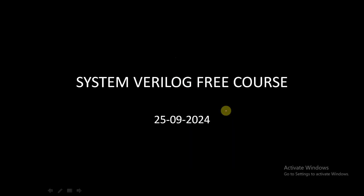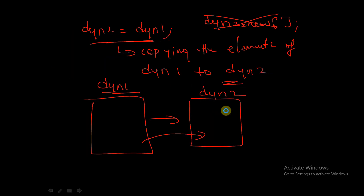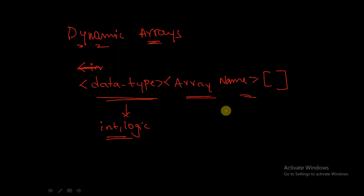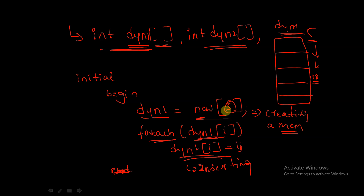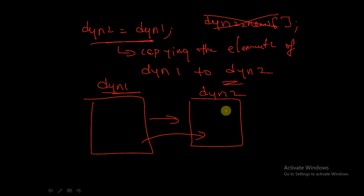Let's start our session today. We are going to discuss the continuation of associative arrays. In the previous session, we introduced associative arrays and discussed the differences between dynamic arrays and associative arrays and other types of arrays.